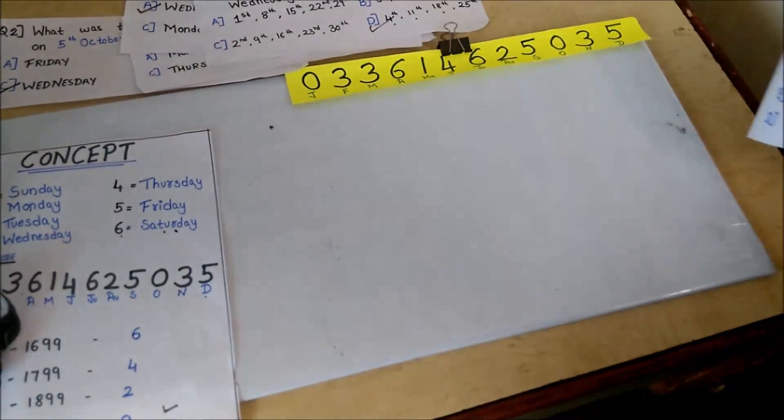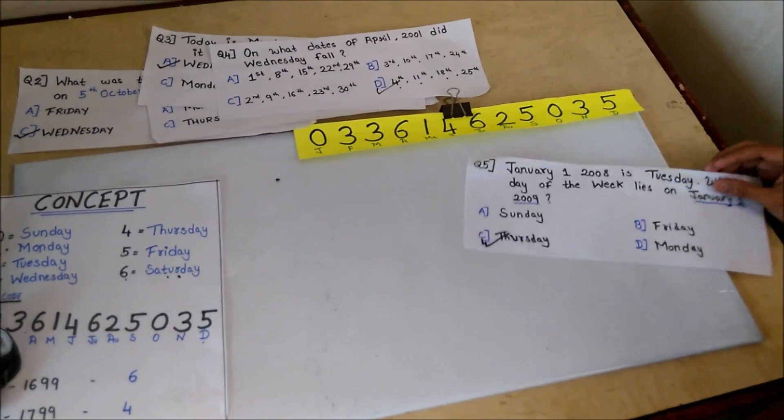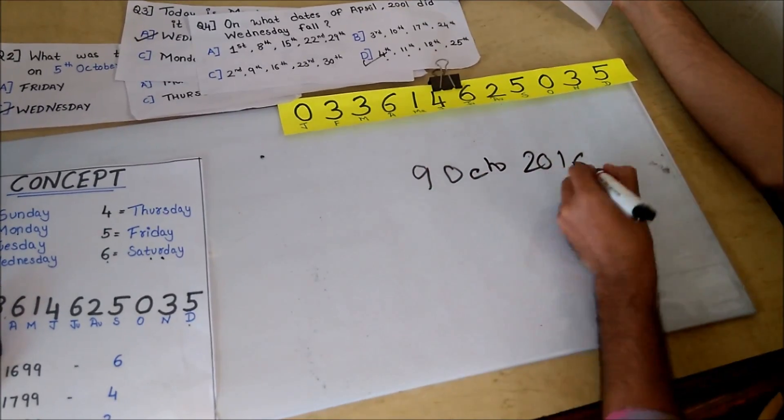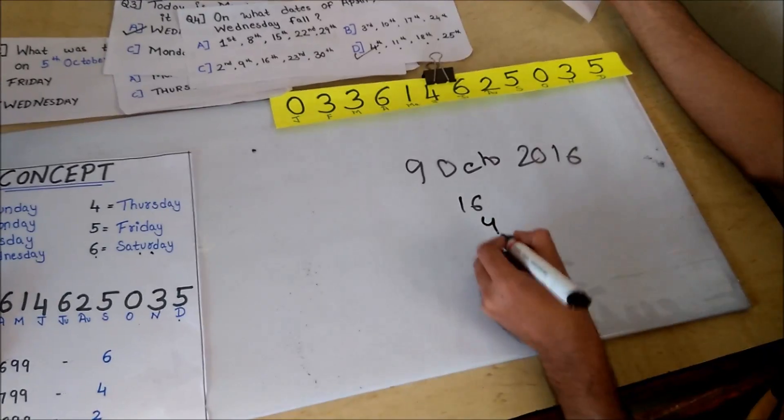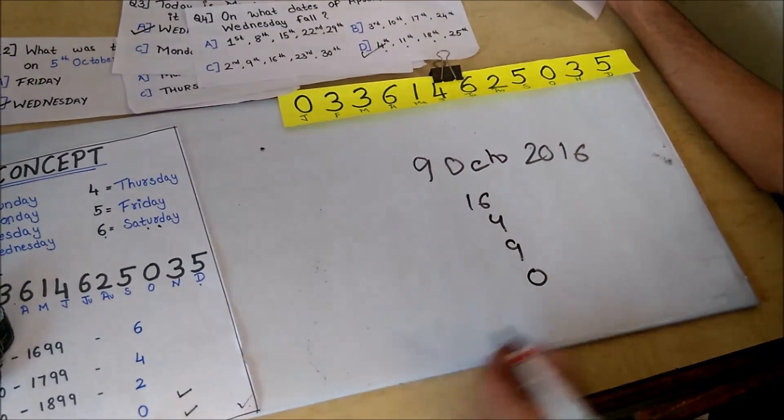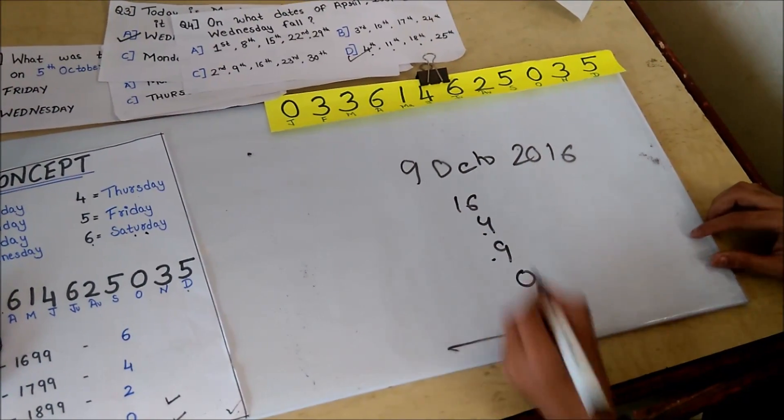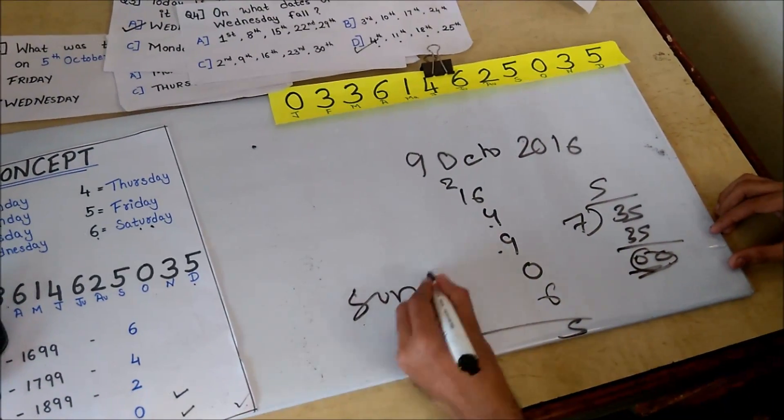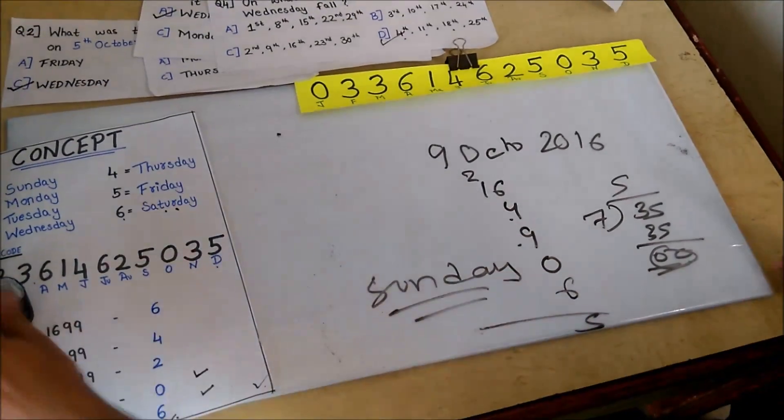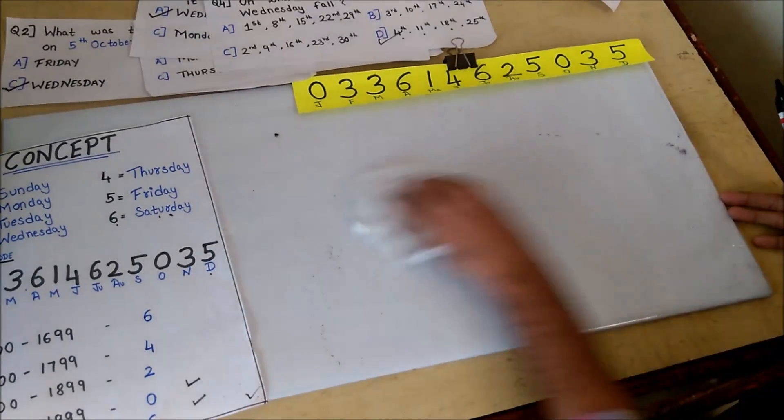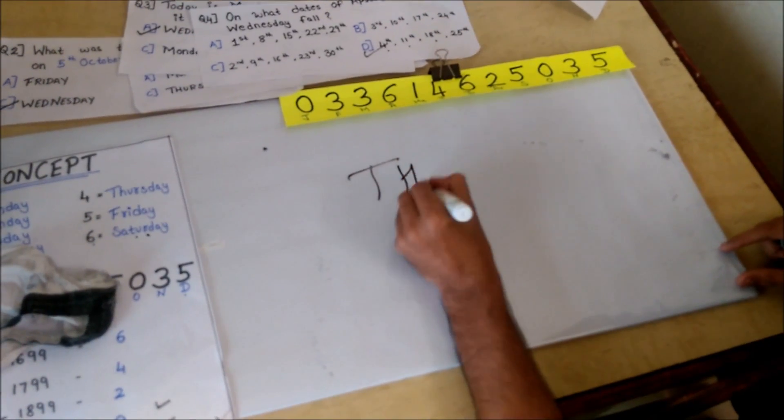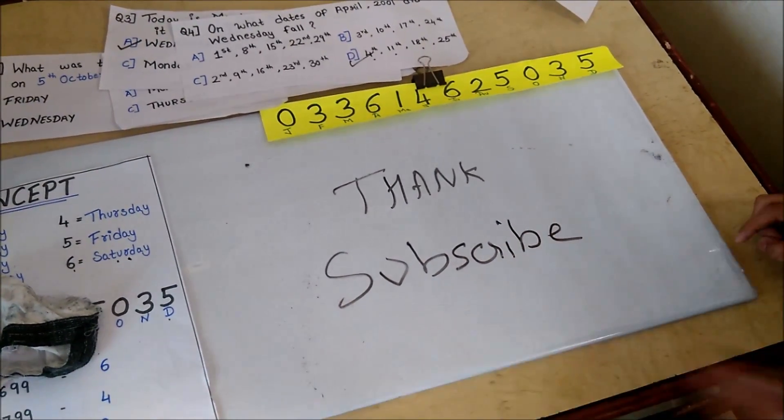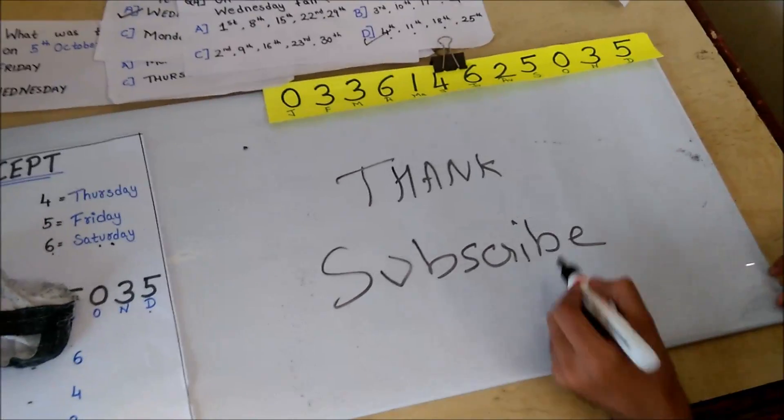Thus you can solve any problem in less than 15 seconds. Take any date, you will solve with less than 15 seconds. I will show you in 10 seconds. If today is 9th October 2016, I will take 16, then divide by 4 to get 4, then I take the date 9, then October code is 0, and the year is 6. Adding: 10, 19, 25, 29, 35. 35 divided by 7 gives remainder 0, which is Sunday. You can solve this problem in less than 10 seconds. Even you can solve, just practice 4 to 5 times. Thank you so much for watching the video. If you want to see more tricks, please subscribe to the channel Last Moment Tuitions and you will see the whole aptitude series with the best tricks and tips. Thank you so much for watching the video.